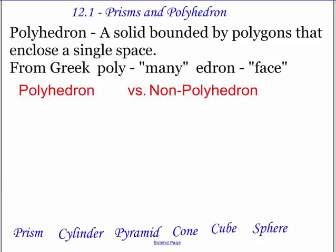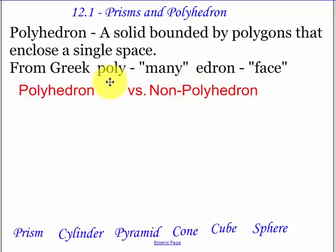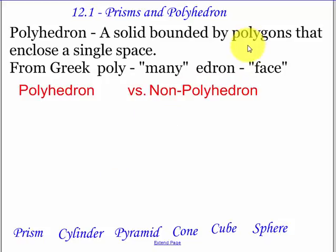Today we're going to be talking about prisms and polyhedrons. A polyhedron is a solid bounded by polygons that enclose a single space. Remember, 'poly' means many, 'hedron' means faces. You're going to be seeing that word a lot throughout your mathematics career. Polyhedrons have to have polygons on their sides.